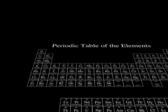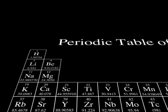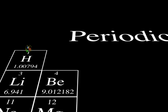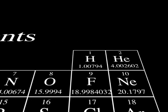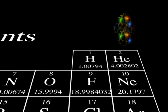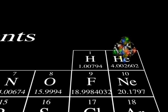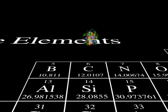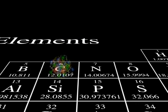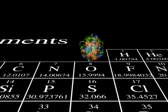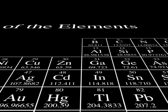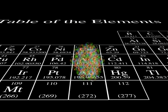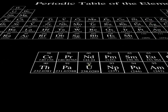These protons and neutrons can then combine to form the nucleus of each element in the periodic table. One proton in the nucleus makes hydrogen. Two form helium. Six, carbon. Eight, oxygen. 79 is gold. And 92, uranium.